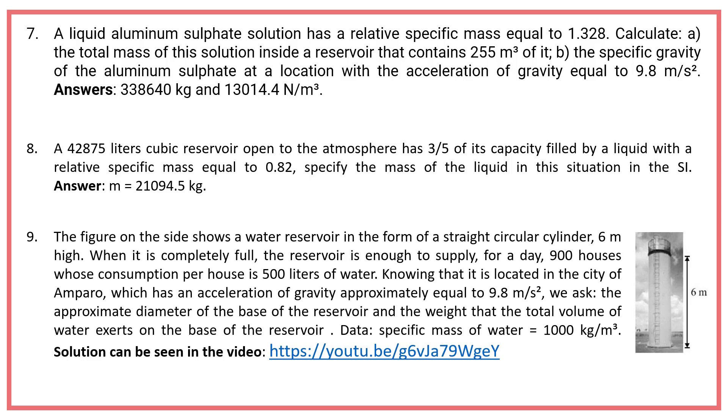Ninth: The figure on the side shows a water reservoir in the form of a straight circular cylinder, 6 meters high. When it is completely full, the reservoir is enough to supply, for a day, 900 houses whose consumption per house is 500 liters of water. Knowing that it is located in the city of Amparo, which has an acceleration of gravity approximately equal to 9.8 meters per square second, we ask: the approximate diameter of the base of the reservoir and the weight that the total volume of water exerts on the base of the reservoir. Data: Specific mass of water equals 1,000 kilograms per cubic meter. Solution can be seen in the video.